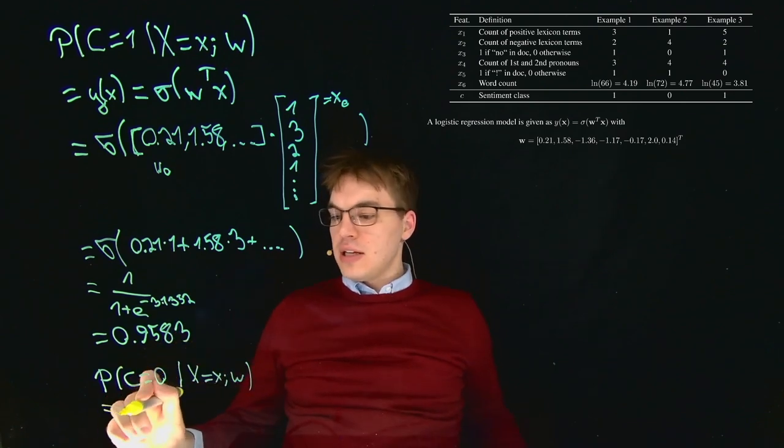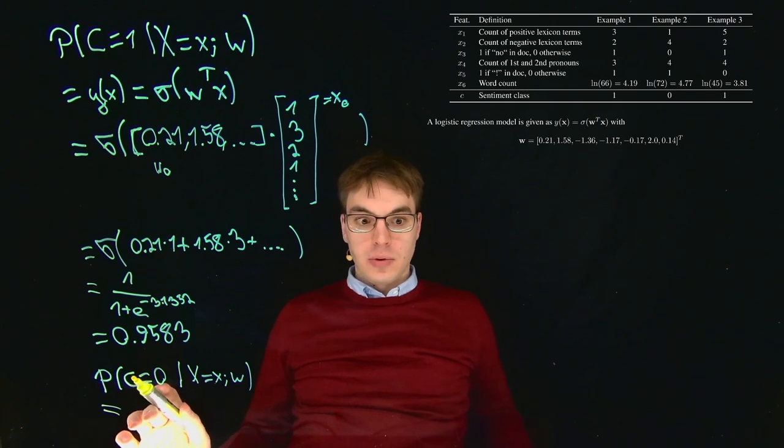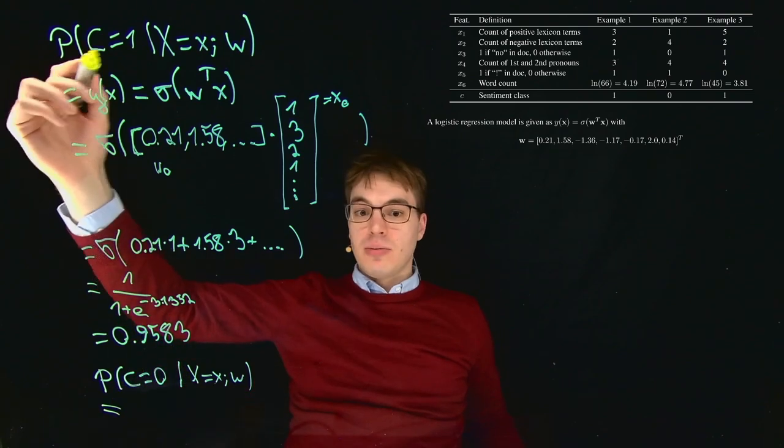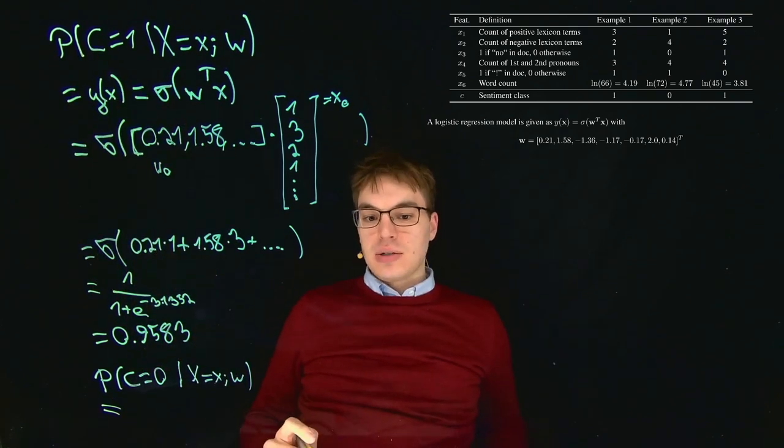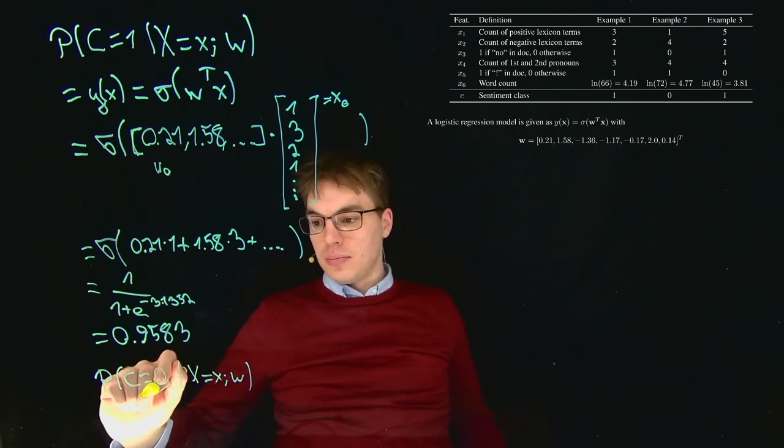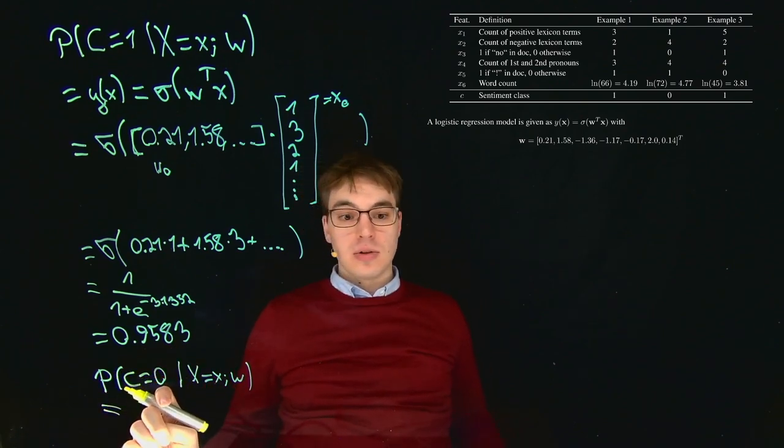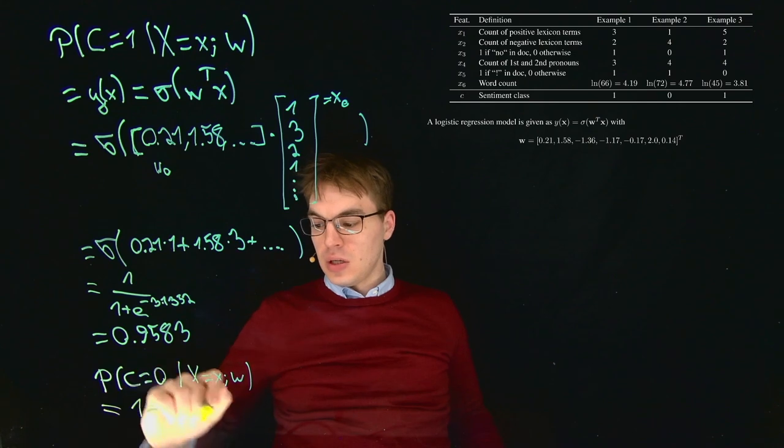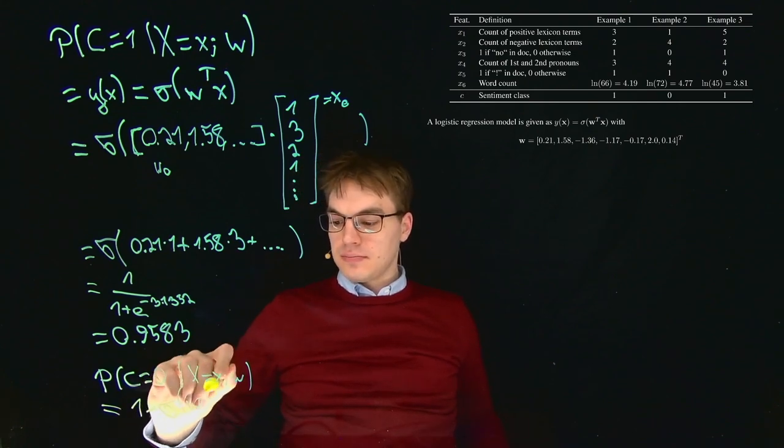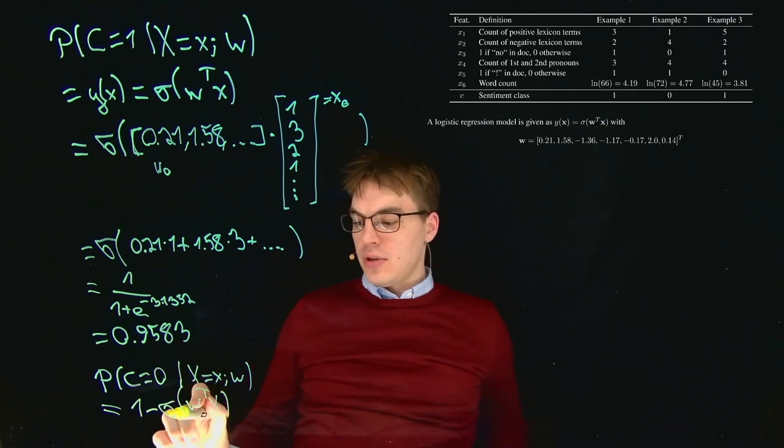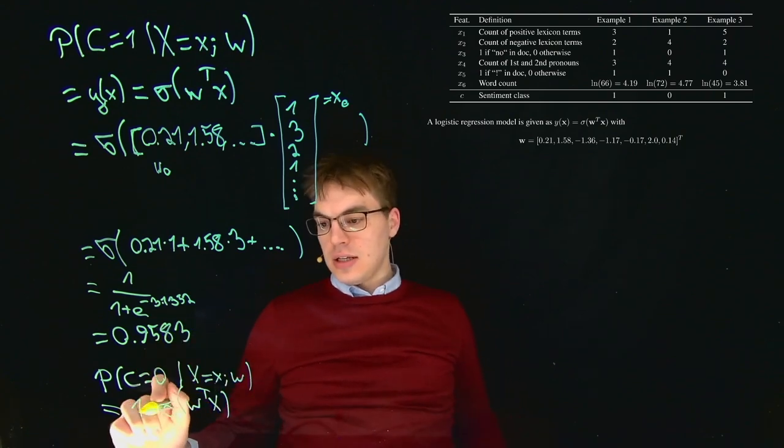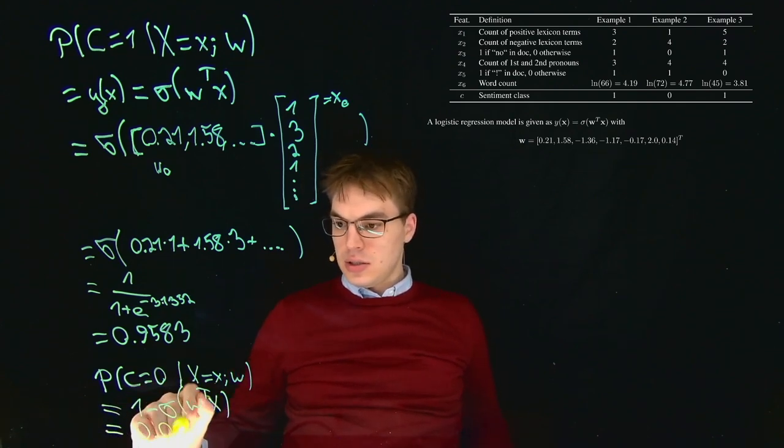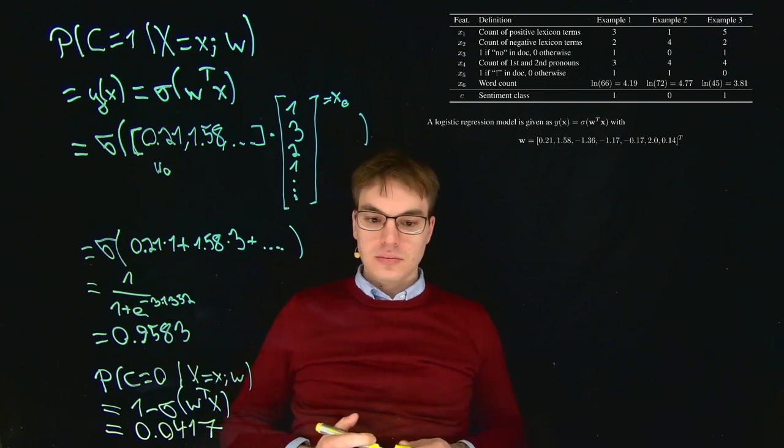Well, it's simply, if you recall what we know about probabilities, 1 minus this probability over here because it's the opposite. We could also argue with our properties of our sigmoid function there. We already know this is 96%, so what we get is 0.0417.